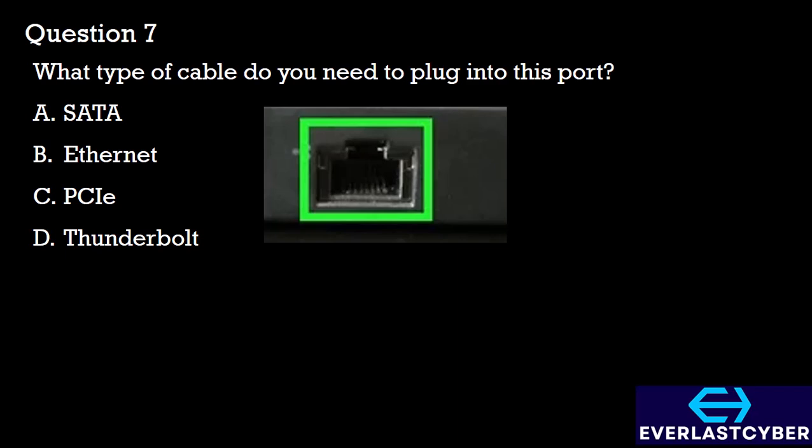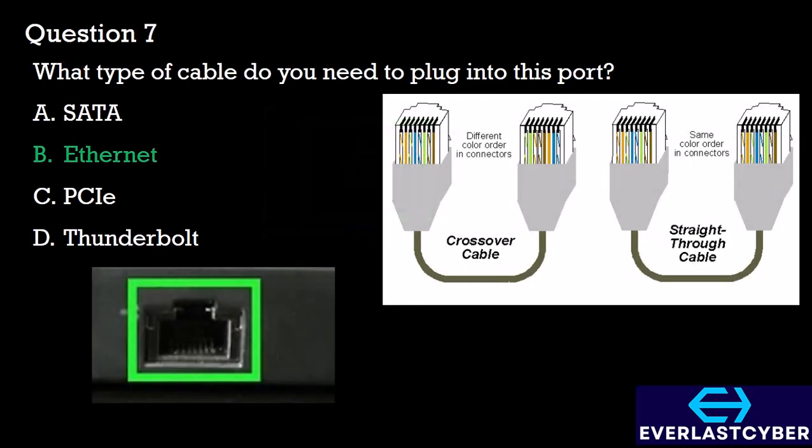Question 7: What type of cable do you need to plug into these ports? A. SATA, B. Ethernet, C. PCIe, D. Thunderbolt. This is our standard Ethernet port, used for connecting Ethernet cables terminated with the RJ45 connector. Ethernet cables can either be straight-through or crossover cables. For the crossover cable, the colors at both ends are in different orders, while for the straight-through cable, the same color standard is maintained on both ends. For more information on networking cables, check the CompTIA A-Plus playlist.